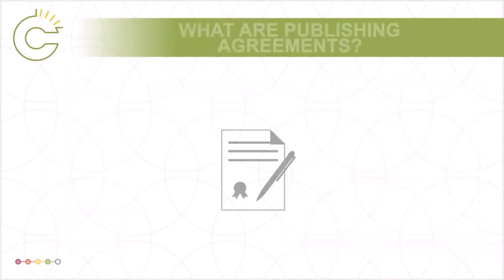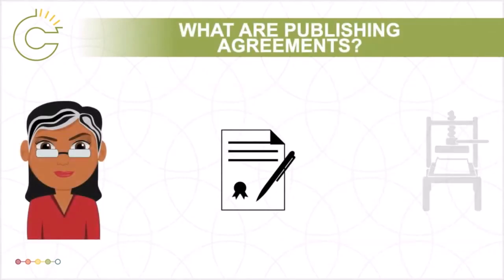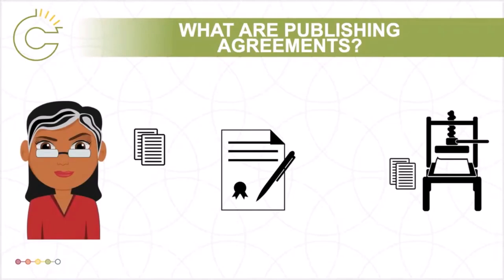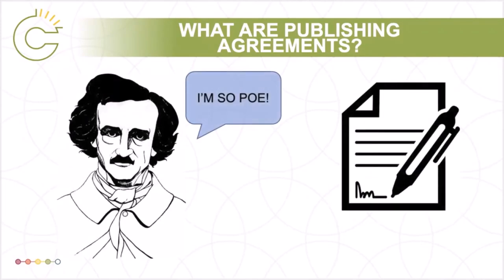Publishing agreements are contracts that set out the legal relationship between an author and a publisher of a work. These agreements vary by sector, publisher, and type of work, but they should all include information detailing the specific commitments and expectations of both the author and the publisher as they pertain to that work. Authors who expect to make money from their writing would normally hire a literary agent to help negotiate the terms of a publishing agreement, including advances and royalty payments.